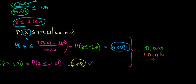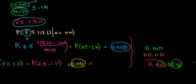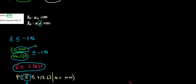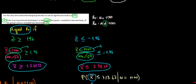So: 0.0034 plus 0.1131 gives us 0.1165. Rounding to two decimal places, this rounds up to 0.12. Let's check — the power of the test is 0.12. The answer is correct and we are done.